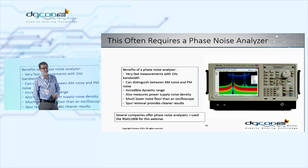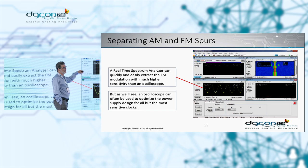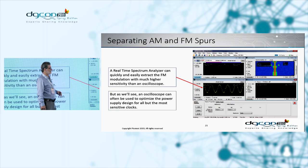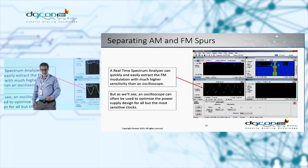We can look at jitter in any integration band we like. The display shows us independently what the AM modulation part looks like, what the PM modulation looks like, the spectrum, the spectrogram, and the phase noise. What we're interested in mostly is phase noise and the jitter.